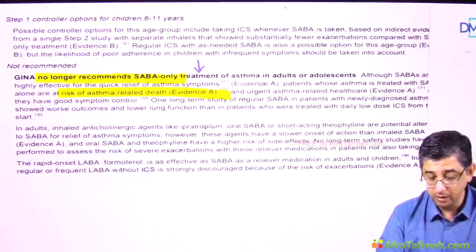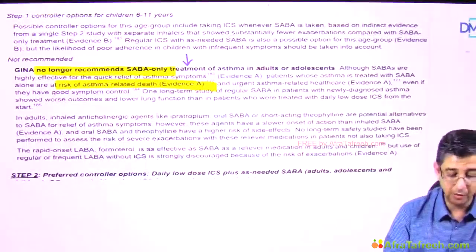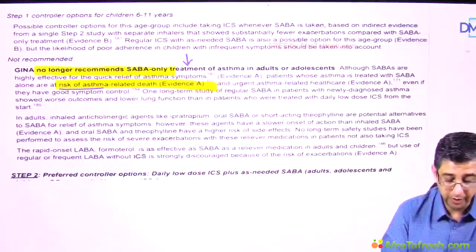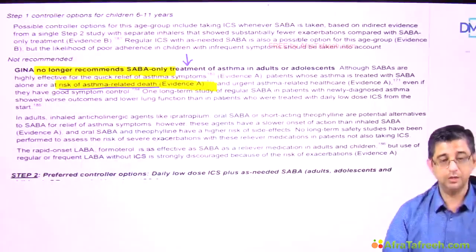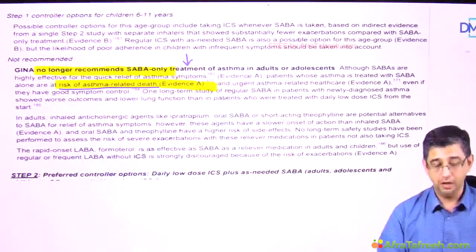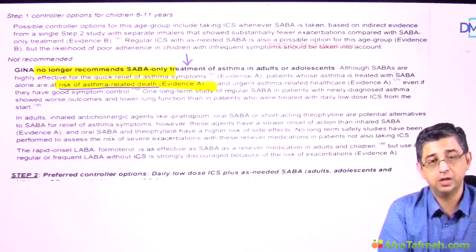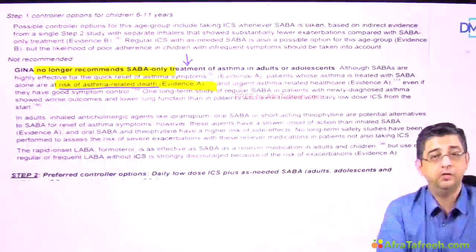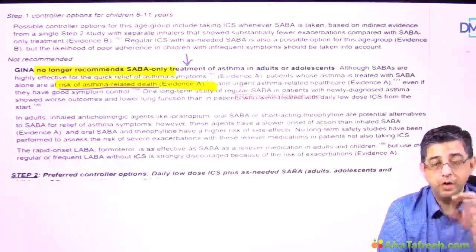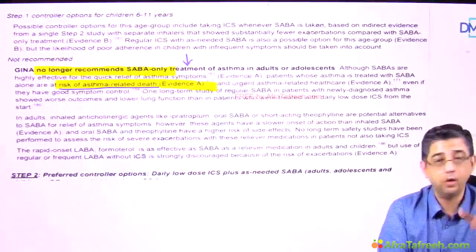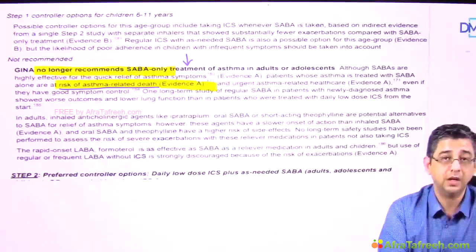Although SABA is highly effective for quick relief of asthma symptoms, evidence shows patients whose asthma care is managed with salbutamol alone are at increased risk of asthma-related deaths. This is a total revolution in asthma treatment. Salbutamol used daily can cause tachyphylaxis and tolerance. More importantly, asthma is fundamentally an inflammatory lung disease — inflammation in the airways needs to be suppressed with steroids. If you treat an asthmatic only with SABA, you are treating only the symptom, not the disease, so complication rates and disease severity can increase manifold, and attacks can be fatal.